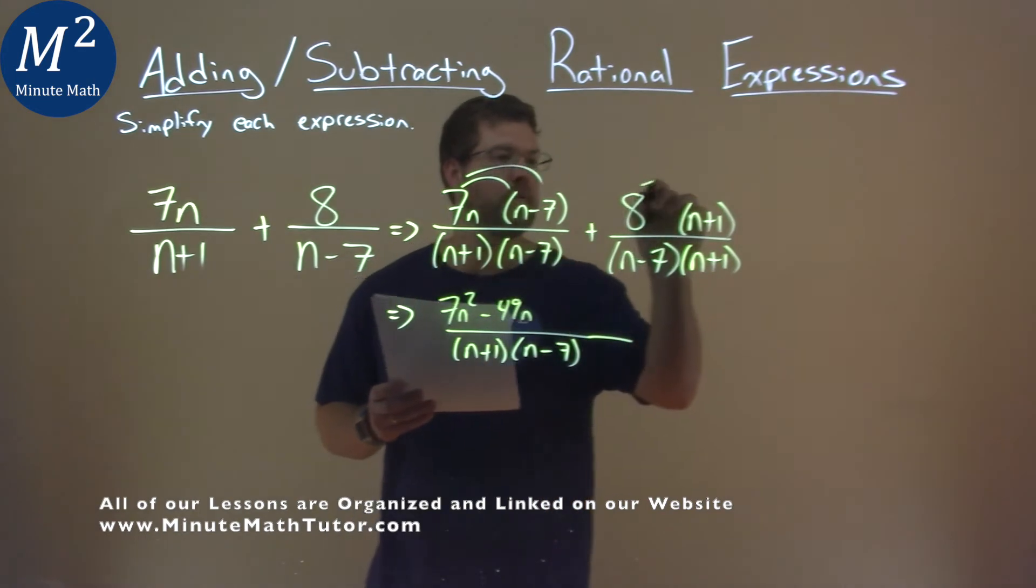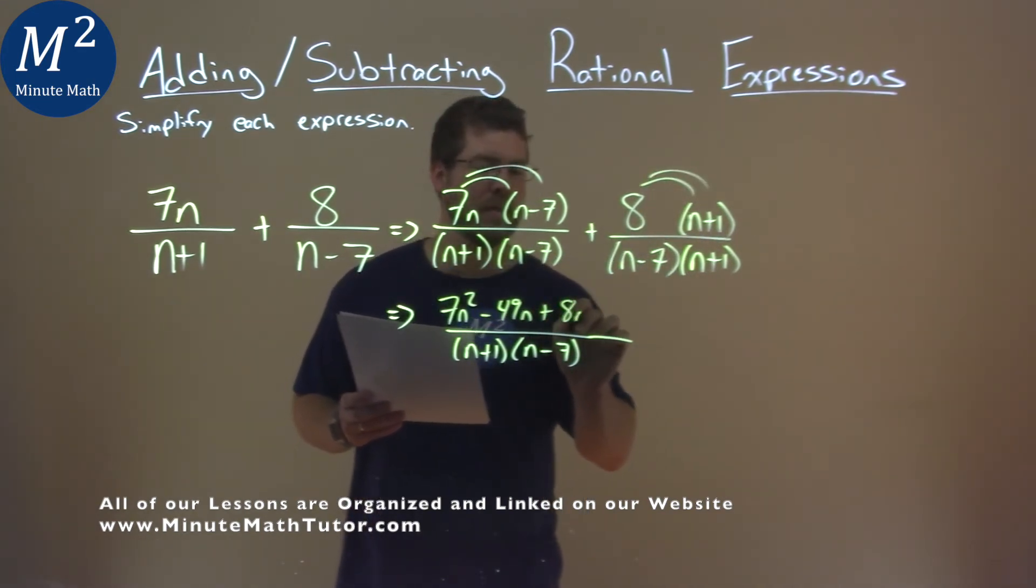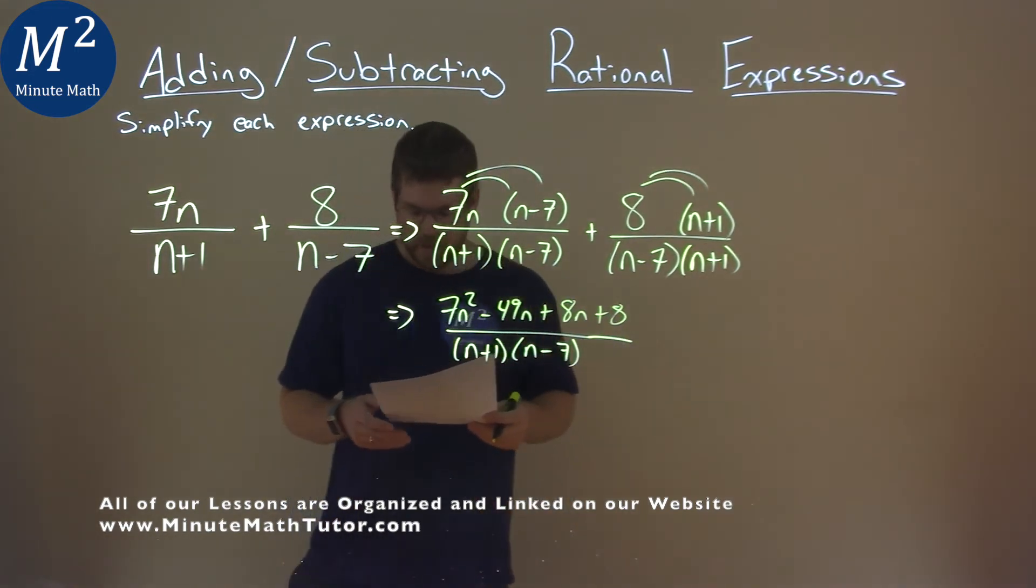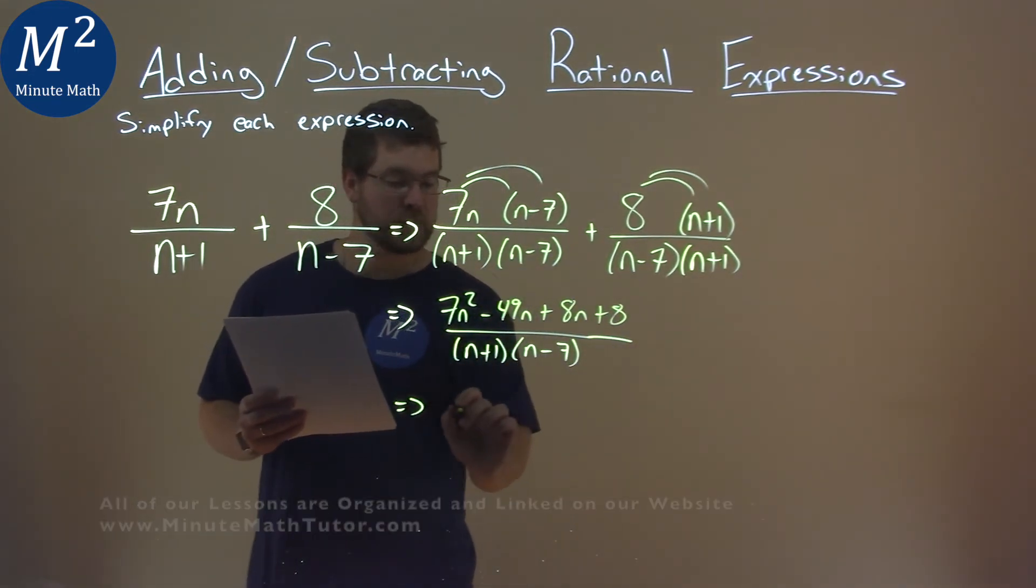We're going to do the same thing with the 8 here. We add 8 times n is 8n, and 8 times 1 is 8. So now we're going to combine our like terms in our numerator.